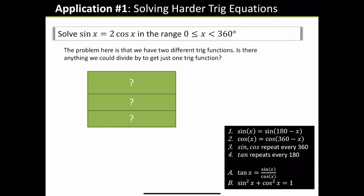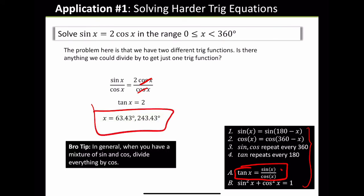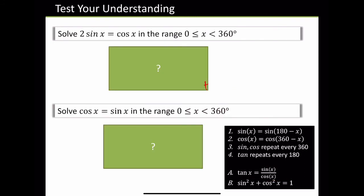Solve sin x equals 2 cos of x in the range of 0 to 360. The problem here is that we have two different trigonometric functions. Is there anything we could divide by to get just one? Well, you could divide everything by cos x. If you divide everything by cos x, you get rid of those. Sin over cos equals tan of x. So tan of x equals 2. Now we can work it out as we did earlier. In general, when you have a mixture of sin and cos, divide everything by cos — that's a general tip.